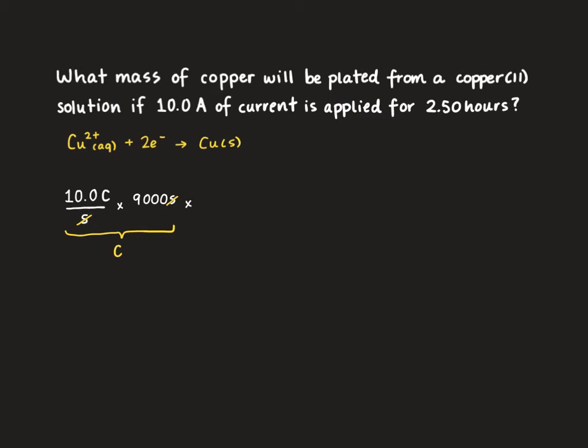Next up we're going to turn that into moles of electrons using Faraday's constant. So we know that one mole of electron carries a charge of 96,500 coulombs. This constant can be found on page 3 of your Chemistry 30 data booklet. So now we've turned that coulombs into moles of electrons.